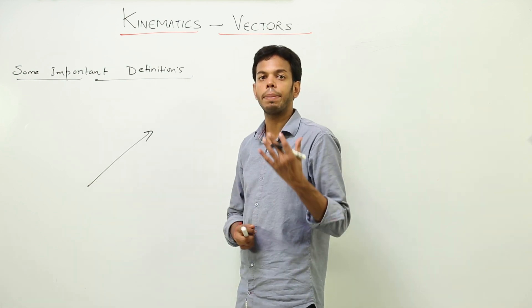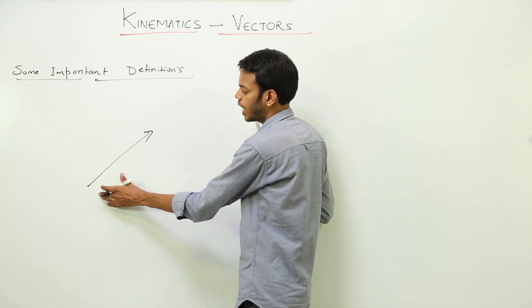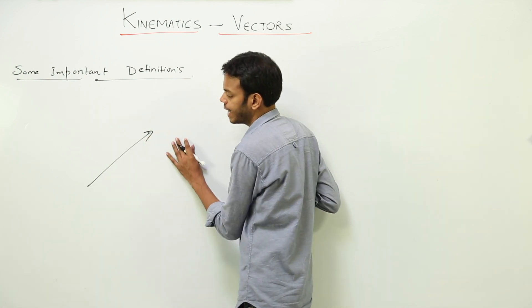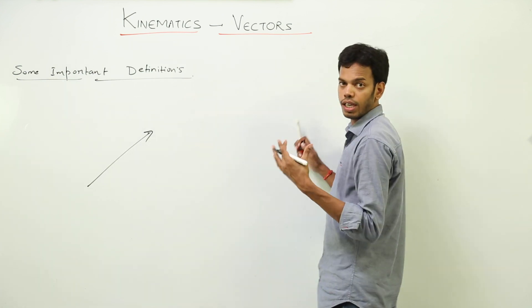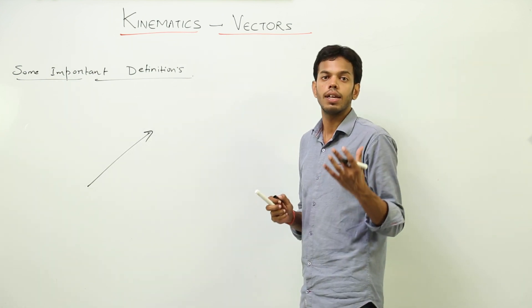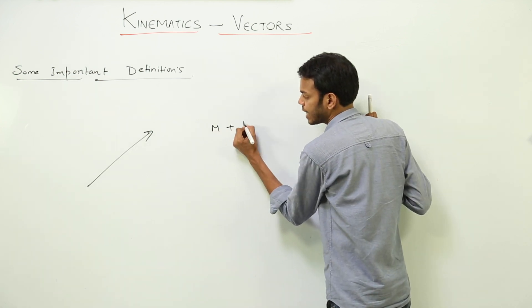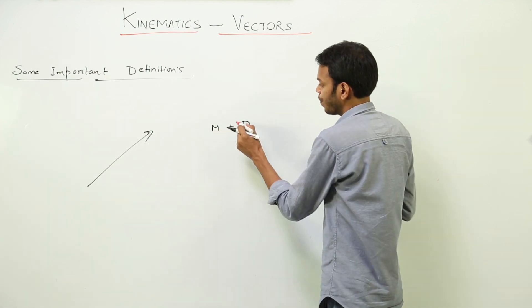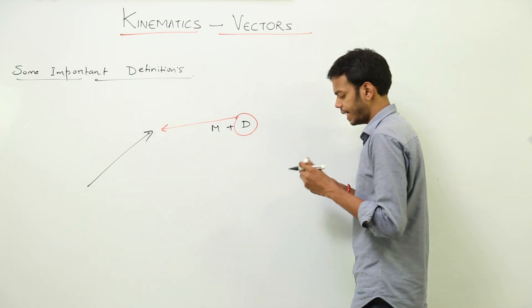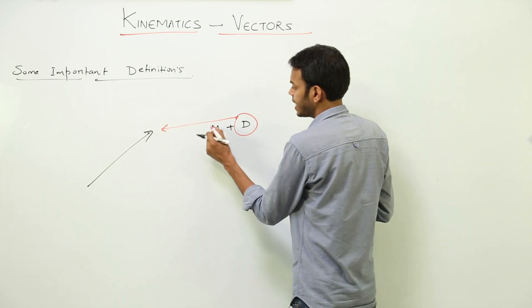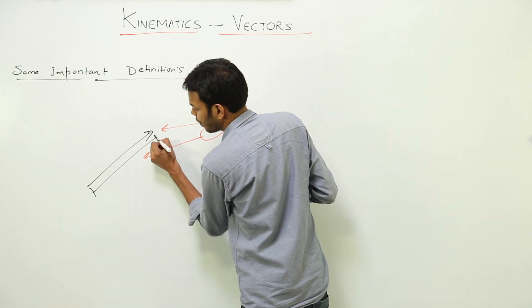The tail is basically the point of application of the force or physical quantity — where it actually started. The other end is called the head. The direction is represented by the head of the vector, whereas the magnitude is represented by the length of the vector.